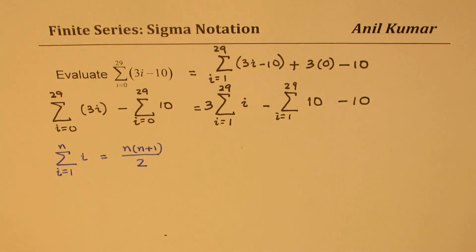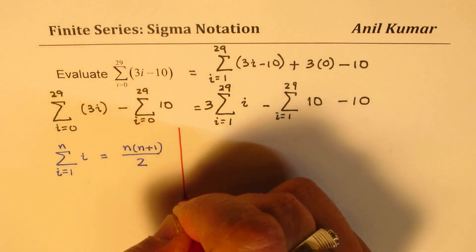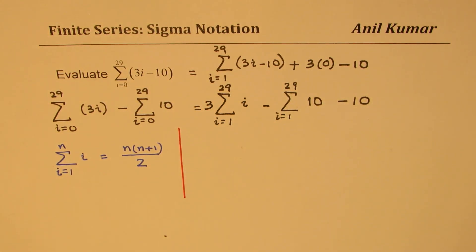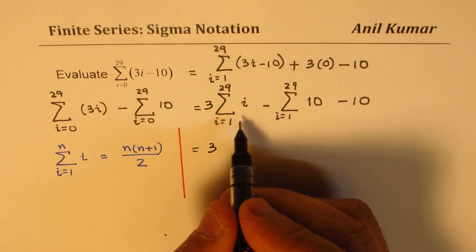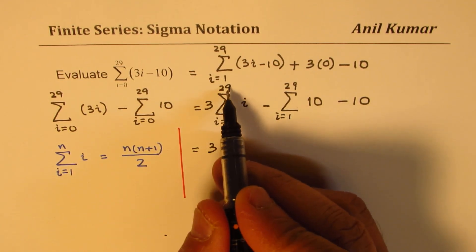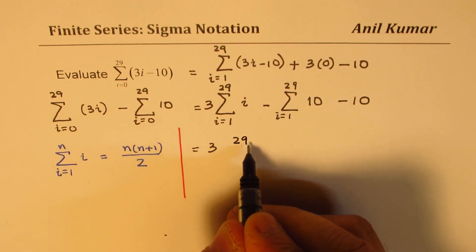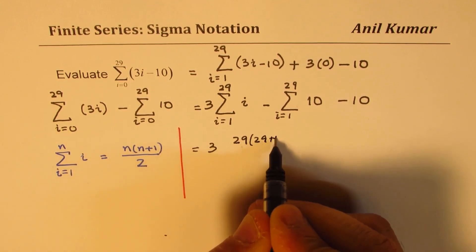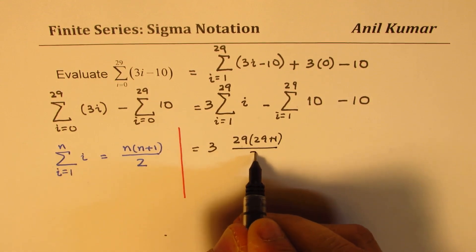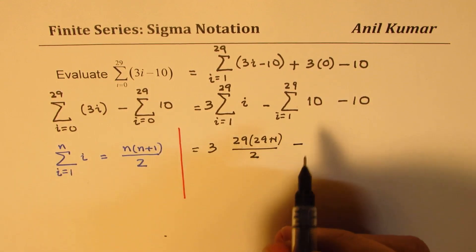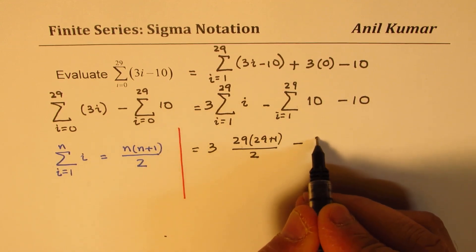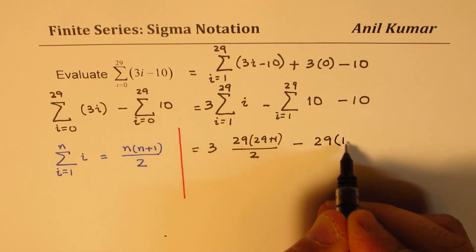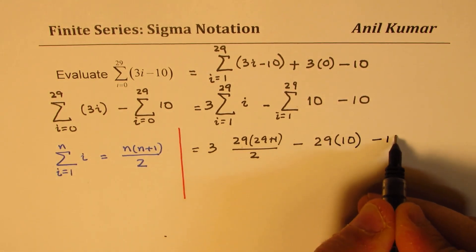So what you get from here is, let me keep this separate. We could write now 3 times, now this sum, n is 29 for us, so it becomes 29 times 29 plus 1, divided by 2. Minus, how many tens are there? These are 29 tens, 1 to 29, correct? Times 10, minus 10. Do you see that?